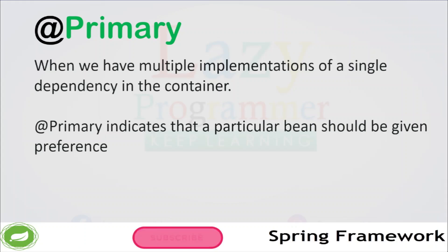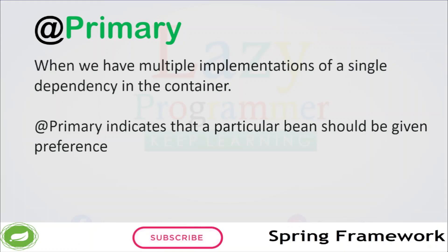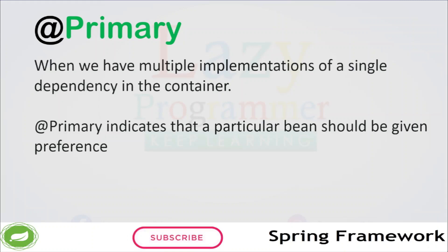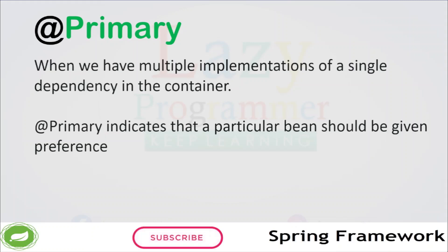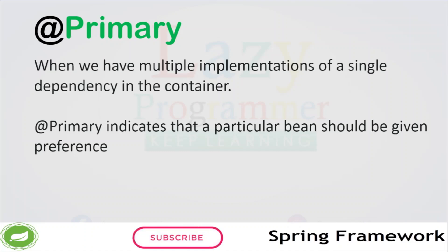To resolve this issue, we can use another annotation: @Primary. This annotation indicates which bean should be given precedence when more than one bean of the same type is present. For example, if we have two different implementations of one interface, we can use @Primary to indicate the preferred one. We must ensure there is only one primary bean among all the acceptable beans.